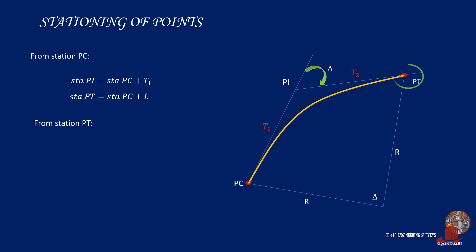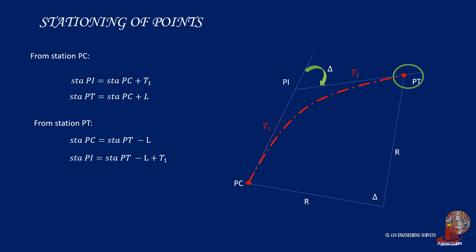If station PT is known, the location of the preceding stations will be as follows. In case we are looking for the station of PC, subtract the length of curve from station PT. In case we are to locate the station of the vertex or point of intersection PI, start with the given station PT, identify station PC first by subtracting the length of curve, and then add the back tangent distance T to reach station PI.